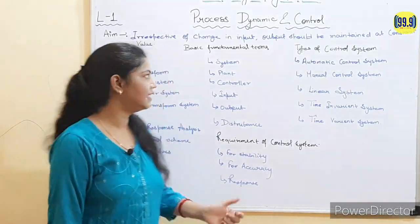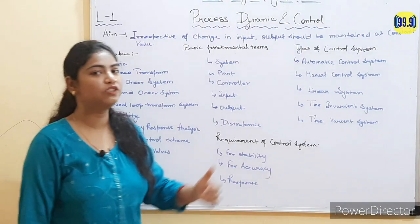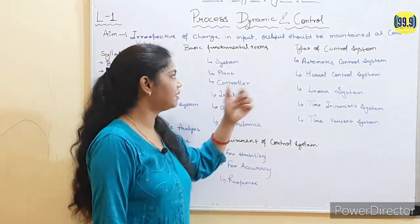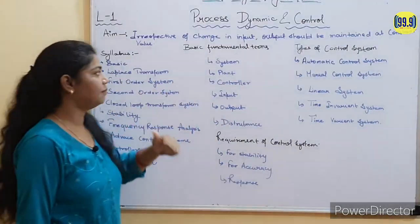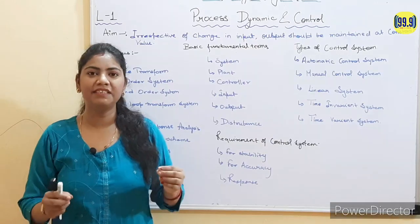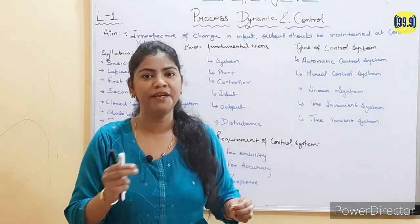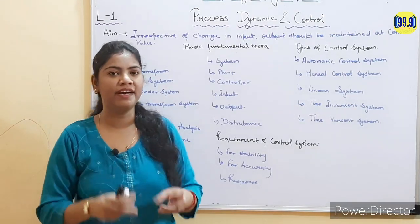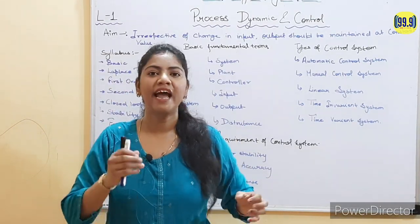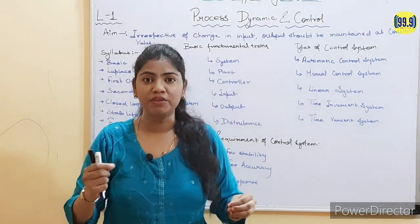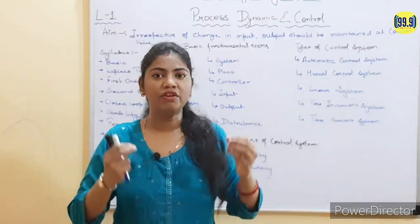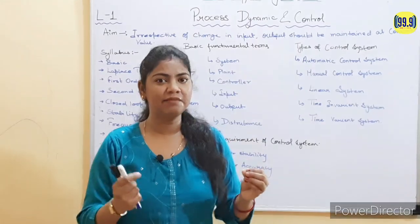Now let's talk about the basic fundamental terms which you will use every time. Let's talk about what a system is. A system is the combination or arrangement of different physical components which come together to form a unit and are used to produce a particular objective.